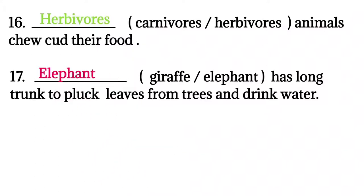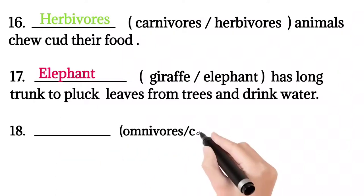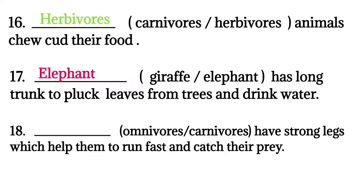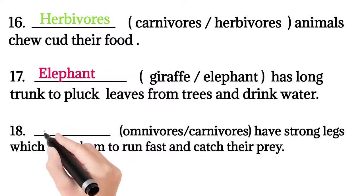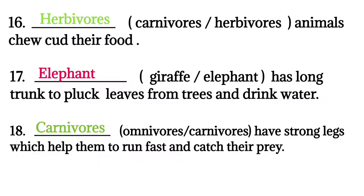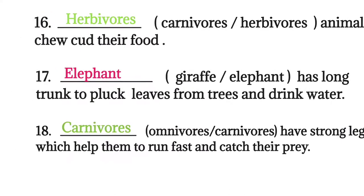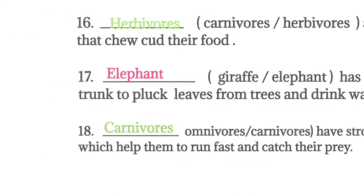Question seventeen: elephant or giraffe has a long trunk to pluck leaves from trees and drink water? Correct answer: elephant. Question eighteen: omnivores or carnivores have strong legs which help them to run fast and catch their prey? Correct answer: carnivores, because they are flesh-eating animals.